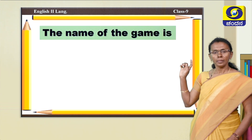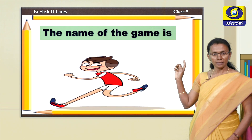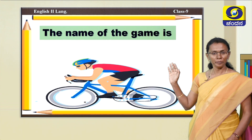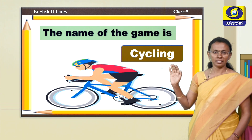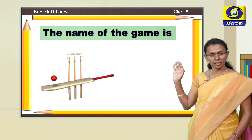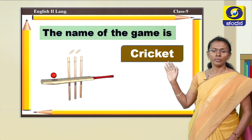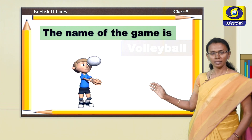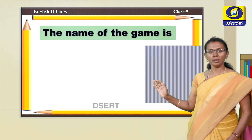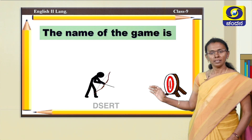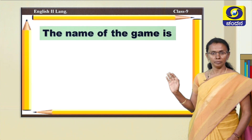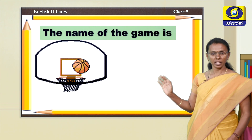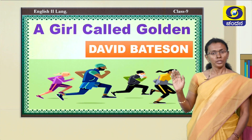Now see the first picture — the name of the game is running, that's an athlete. Next one, the name of the game is cycling. Next one, children, your favorite game — cricket. Next one, the name of the game is volleyball. Next one, archery. Next, hockey. And finally, the name of the game is basketball. You have really identified all the games!